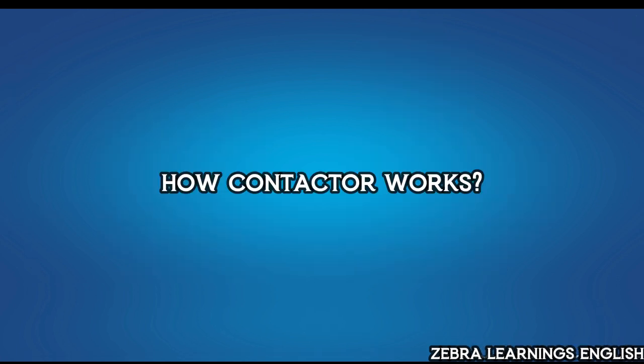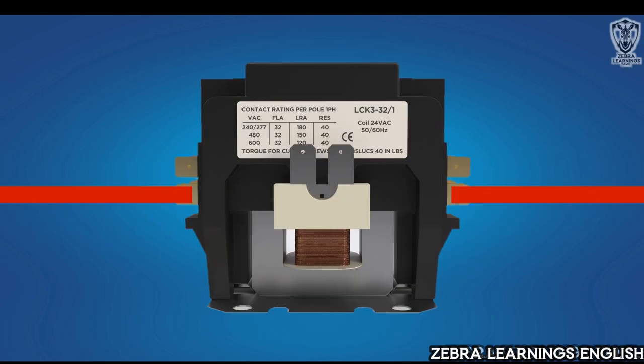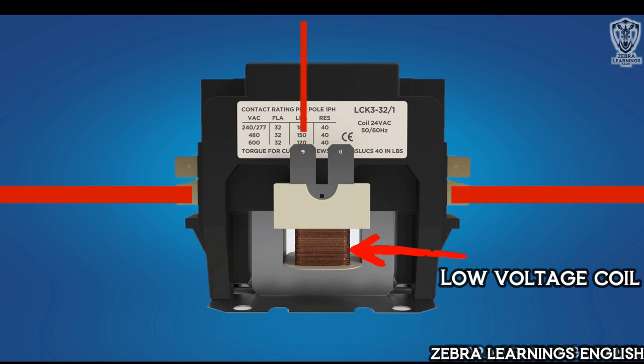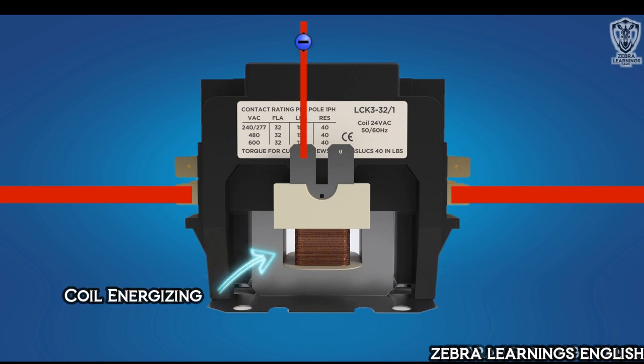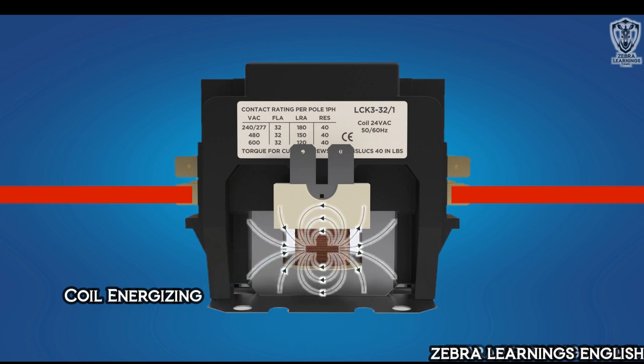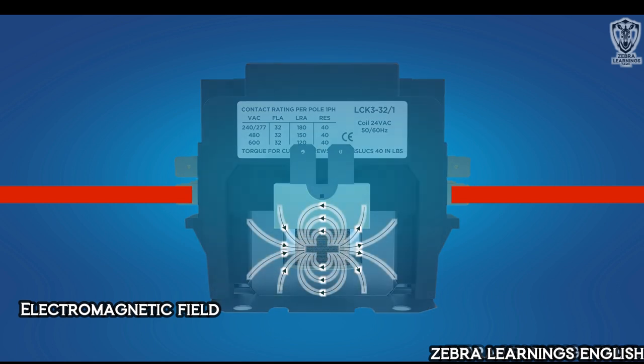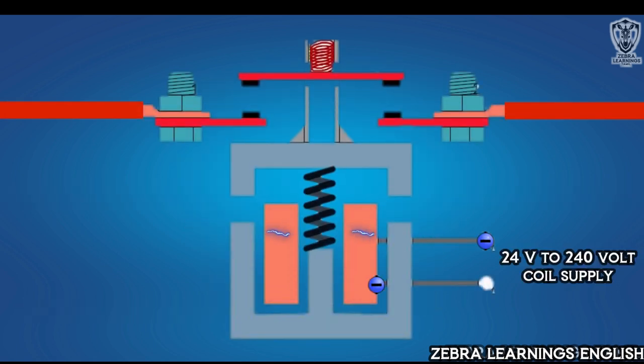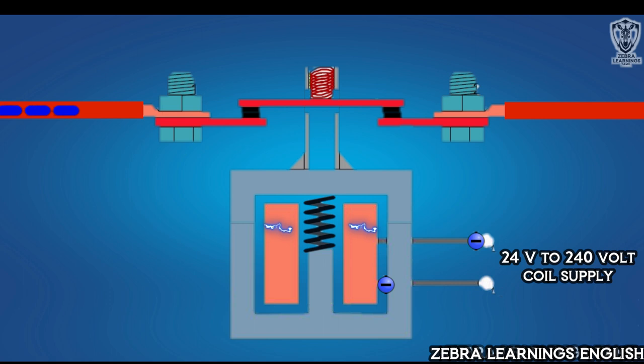Now, let's see how contactor works. Contactor has a low voltage coil. When 24-volt power is supplied to this coil, the coil energizes and an electromagnetic field is generated in the coil. By this magnetic field, when the terminal in it is attracted and connected, the power supply will start to flow through it.